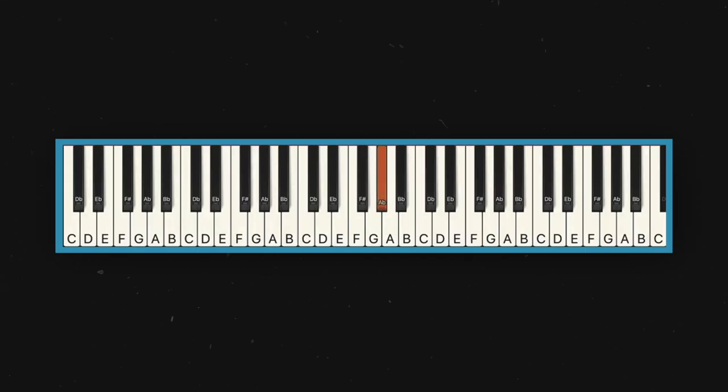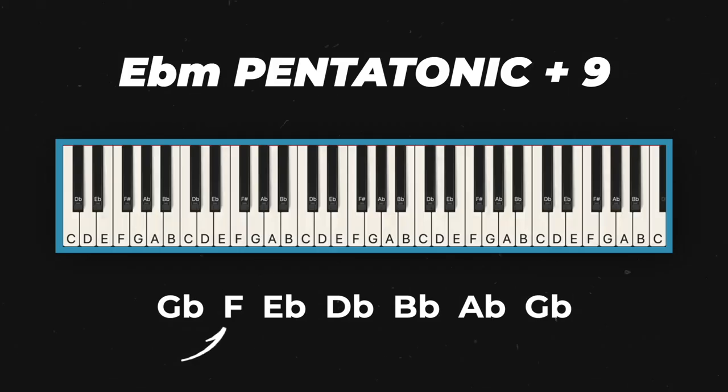Anyway, that's the progression for the chorus, and it's the same for the verse. Now before we jump to the bridge, which has that cool gospel walk-up I mentioned earlier, check out the sick vocal run around the 2-minute mark. This run features that Eb minor pentatonic scale, but with the 9th in there as well.